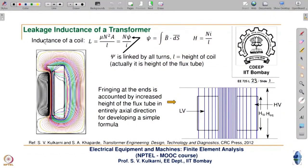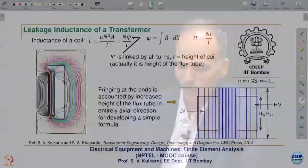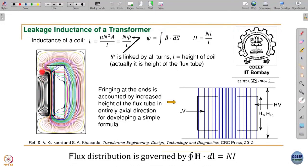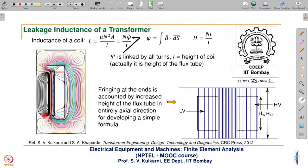When we talk about a transformer and leakage inductance, in finite element simulation we take only one window. This could be a three-phase transformer — we take only one window. The first is the LV winding, masked by the flux line, and the second is the high voltage winding. We set the ampere turns to be equal and opposite in the FEM simulation: N1*I1 = N2*I2, and one of them is made negative, so the net ampere turns enclosed in any closed flux contour in the core portion will be zero.